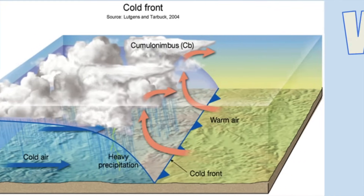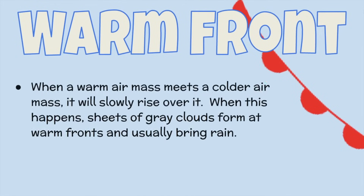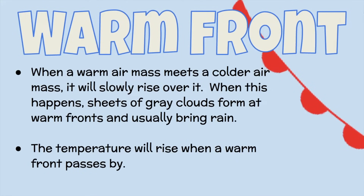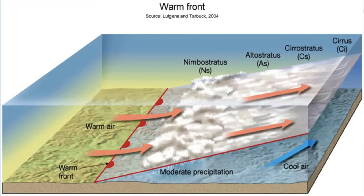So what about a warm front? When a warm air mass meets a colder air mass, it will slowly rise over it. Heat rises, right? When this happens, sheets of gray clouds form at warm fronts and usually bring rain. The temperature will rise when a warm front passes by. Here's an example of warm air rising above the cooler air.